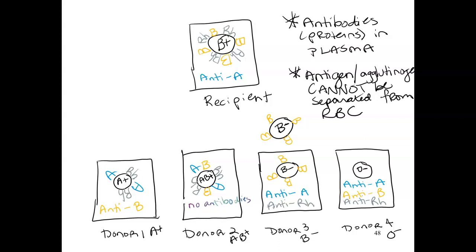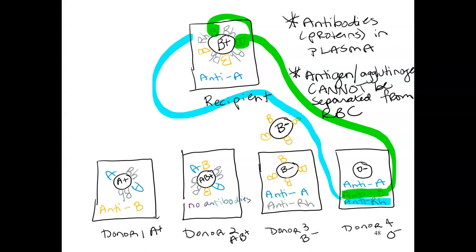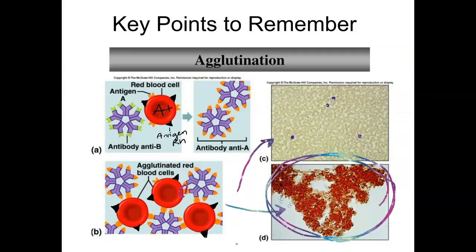So we have our four donors, and the answers here are there is no one that can give a whole blood transfusion because if we did, we'd see agglutination reactions. So I'm going to show you what would happen if I gave, let's say, whole O negative blood to this B positive recipient. The anti-B from the donor is going to agglutinate with the B agglutinogens on the recipient cells. Even more, the anti-Rh from the donor is now going to agglutinate with the Rh on the recipient cells.